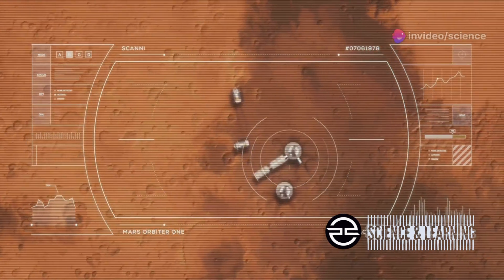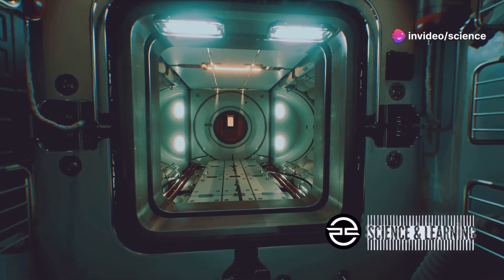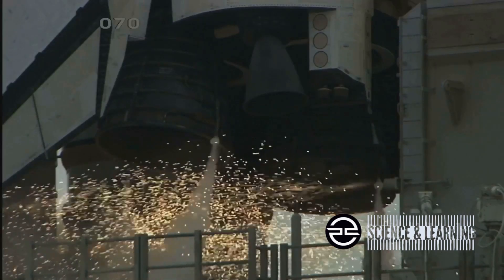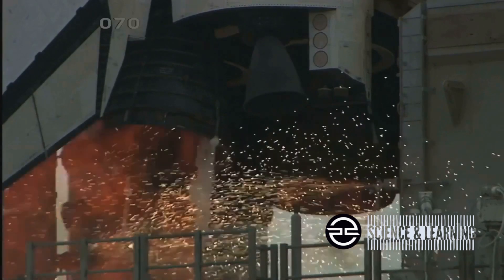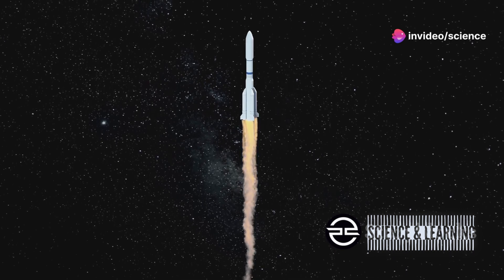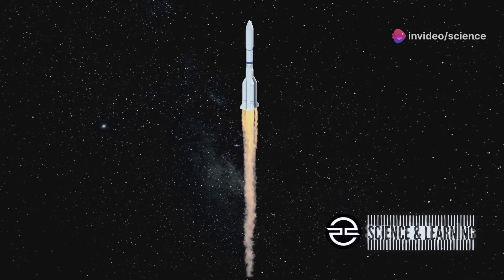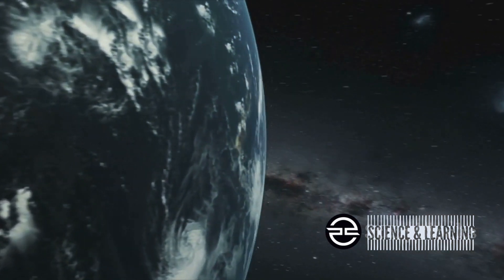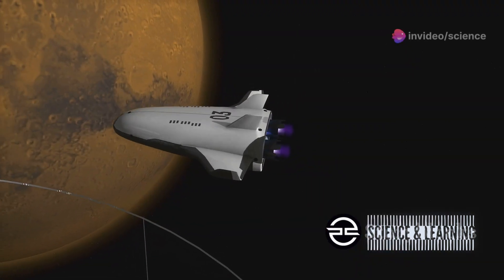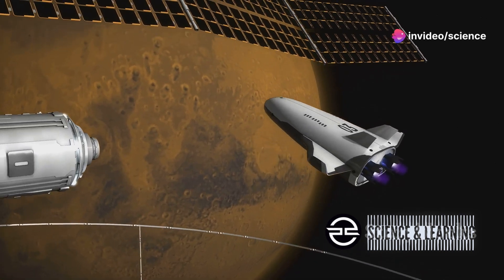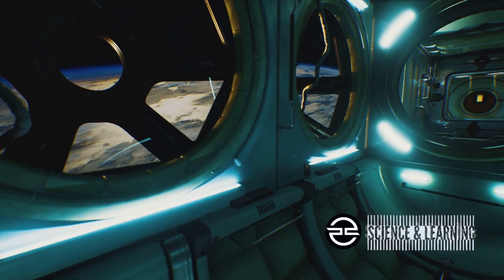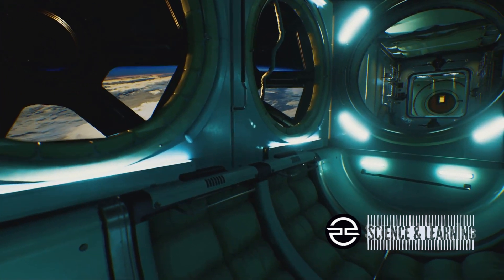Imagine strapping into a spacecraft powered by a pulsed plasma rocket, embarking on a journey to Mars that will take a mere 60 days. As the engines ignite, you wouldn't feel the intense vibrations and g-forces associated with chemical rockets. The pulsed plasma rocket generates thrust in a series of controlled bursts, resulting in a smoother acceleration that is much gentler on the human body. The Earth would shrink behind you, a vibrant blue sphere against the backdrop of the cosmos. Ahead, Mars would gradually grow larger, its reddish hue becoming more pronounced with each passing day. The windows of your spacecraft would offer a constantly changing panorama of stars, planets, and the ethereal glow of distant galaxies.